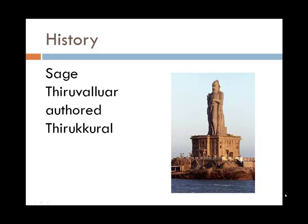A little bit about history. This is a statue of the most celebrated Tamil poet called Tiruvalluar, and the statue can be found in Kanyakumari, which is the southernmost point of the peninsula of India. Sage Tiruvalluar authored a book called Tirukural. Tirukural is a collection of 1330 different unique and beautiful two-line poems or couplets which basically cover every aspect of human life. It's a book about morals and ethics, and the book has 133 chapters. In fact, the statue is 133 feet high.